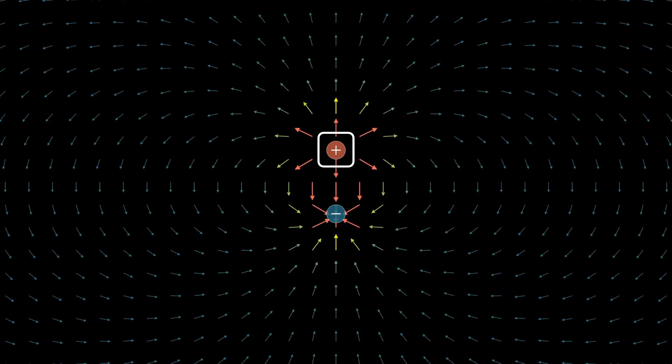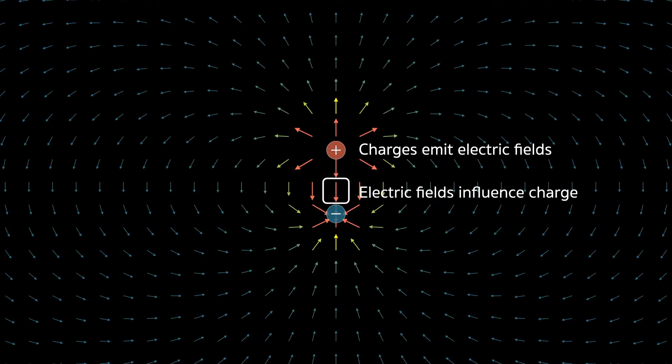So now we have two key properties. Charges emit electric fields, and fields influence charge. So now, let's see what happens beneath the surface of that attraction we saw earlier.